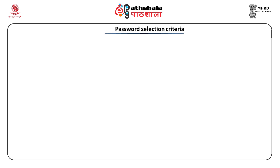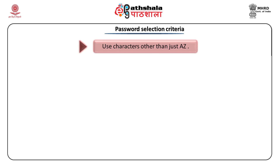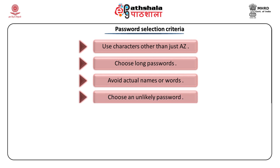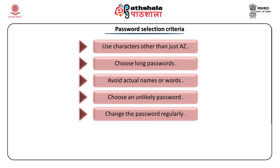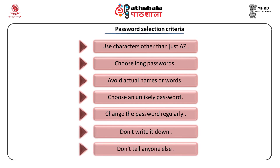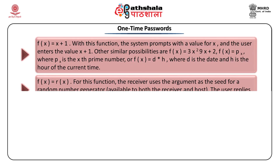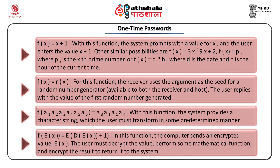Password selection criteria: use characters other than just A to Z, choose long passwords, avoid actual names or words, choose an unlikely password, change the password regularly, don't write it down, and don't tell anyone. The best approach is a one-time password — one that changes every time it is used. One-time passwords can be generated through functions such as f(x) = x + 1 or f(x) = r(x) where r is a random number generator, or they can be generated through an encryption/decryption process.